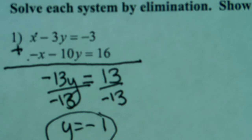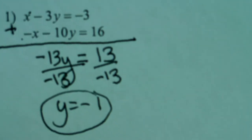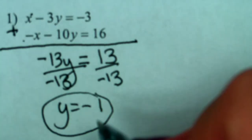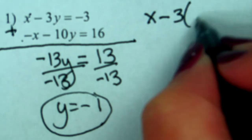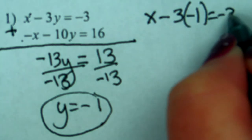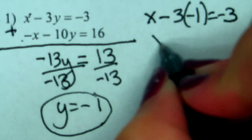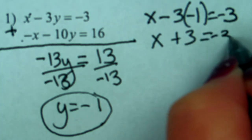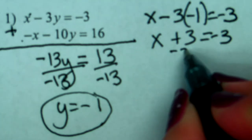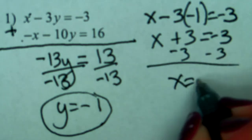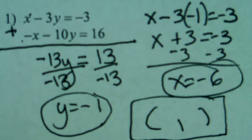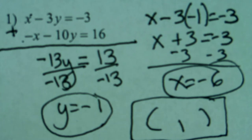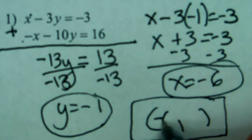But we want x and y — we want them both. So you pick an equation to substitute this back in. If we pick the top equation, x minus 3y, and y is negative 1, equals negative 3. So x plus 3 equals negative 3. Subtract 3 from both sides, x equals negative 6. Then we write the answer as an ordered pair: negative 6, negative 1 — x comma y.